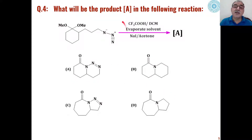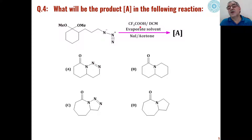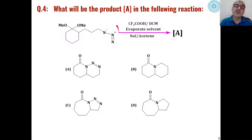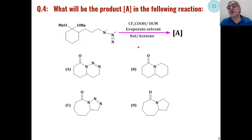Fourth, in the case of azides reacted under acidic conditions — for example in the presence of trifluoroacetic acid and dichloromethane as solvent — these azides are reacted with sodium iodide. After evaporation of the solvent, in the second step they are treated with sodium iodide in acetone as solvent. What will be the product formed during this reaction?